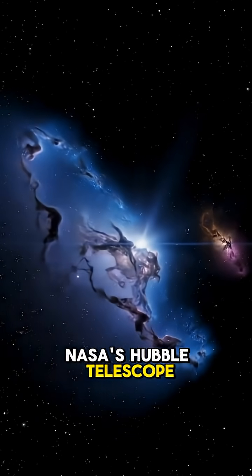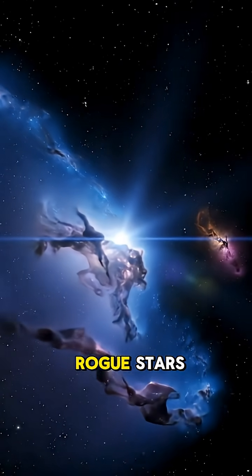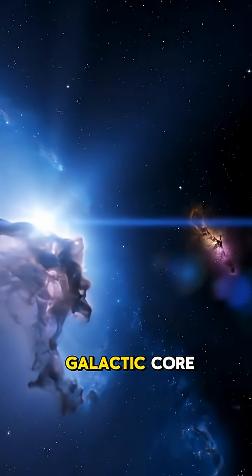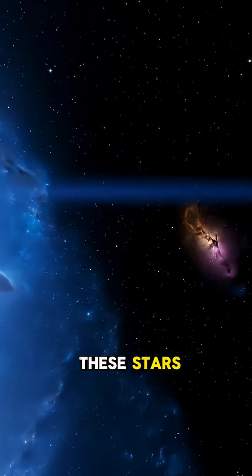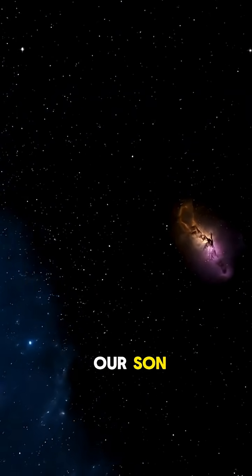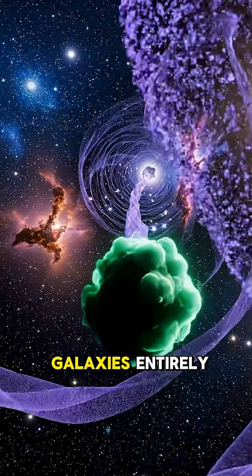NASA's Hubble Telescope has even spotted rogue stars drifting thousands of light years from the galactic core. These stars are older than our sun and might have come from other galaxies entirely.